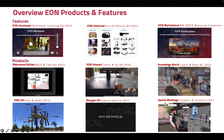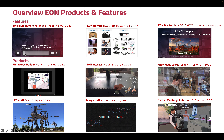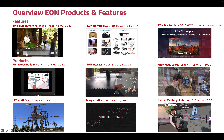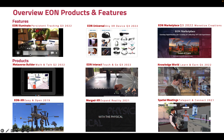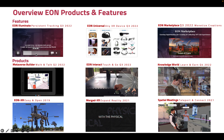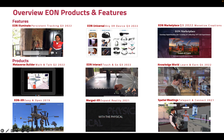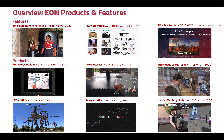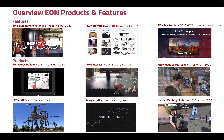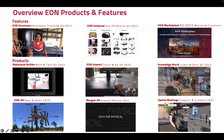Another interesting product that we believe will be groundbreaking is the integration of EON with Google capabilities to do a number of things — we call it EON Illuminate. We are talking about persistent tracking, which enables you to connect anchor points that you can place anywhere in the world.